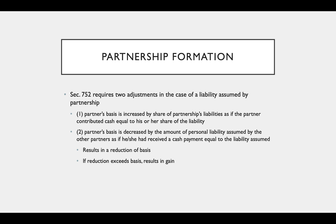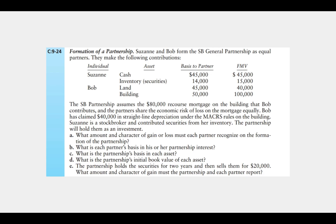For example, when a partner contributes an asset that is subject to a liability and the partnership takes over that liability, using the same 20 percent partner example—if that partner contributes an asset with a liability of $100,000, in part two we decrease the basis by the amount of the personal liability assumed by the other partners, as if he or she had received a cash payment. So we decrease the basis by that amount.